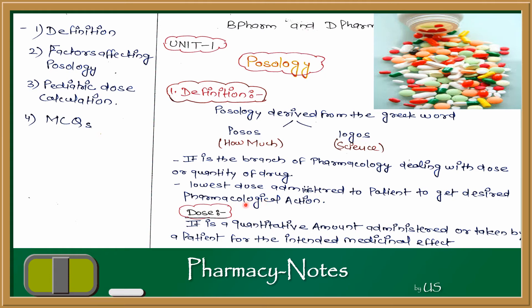Dose is defined as: it is a quantitative amount administered or taken by a patient for the intended medicinal effect. This is a quantitative amount, like 500 mg of paracetamol, which can be given to a patient to produce a medicinal or pharmacological action.